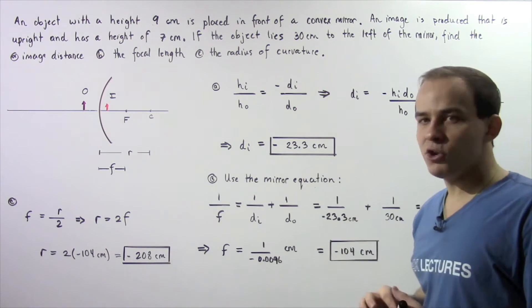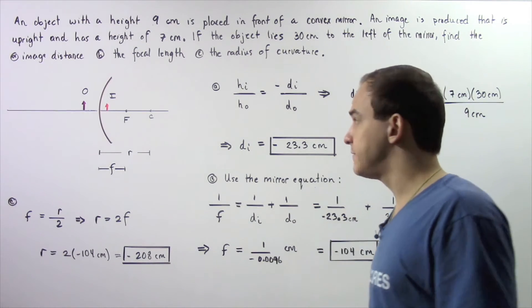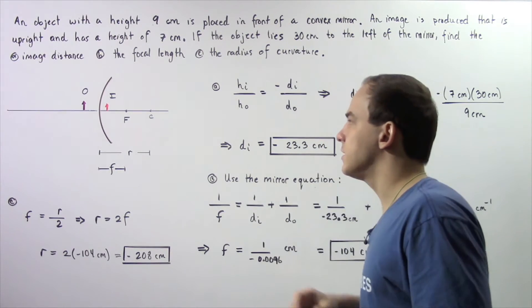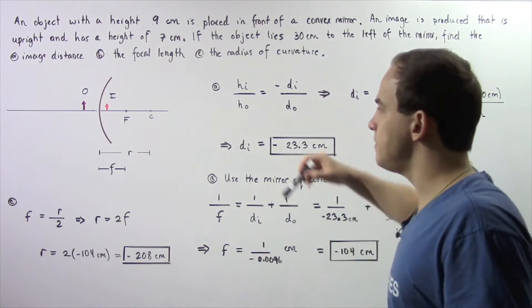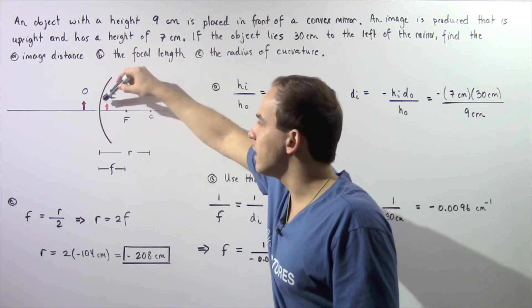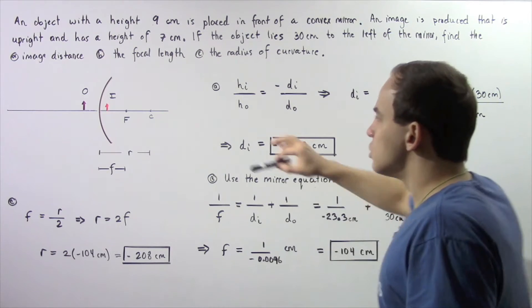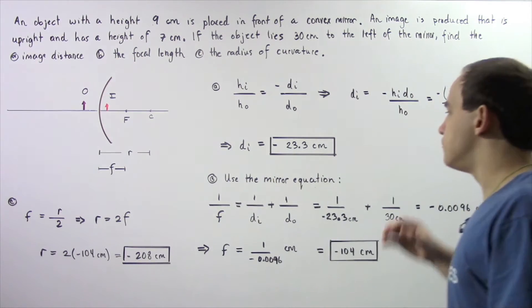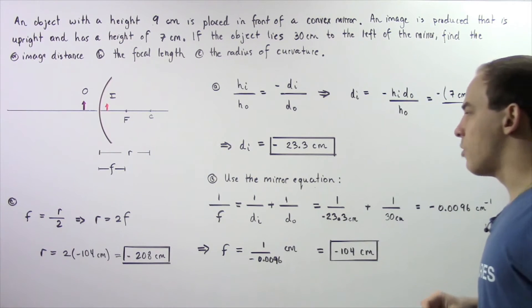The negative value means the image is found to the right of the convex mirror — behind the mirror — as shown by the red arrow labeled I in the diagram. This is our image, while O is our object. Now let's move on to Part B.